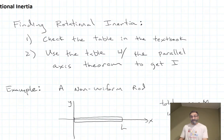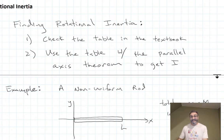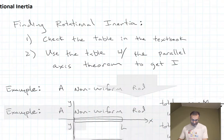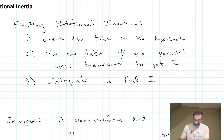We check the table — there's no object in that table with a non-uniform mass density, so it's not there. And we can't use the table with the parallel axis theorem either, because no object in the table has non-uniform mass density. So we go to our third and final step, a last resort: we integrate to find I.